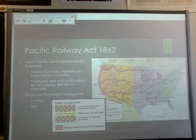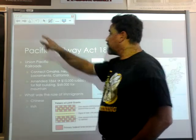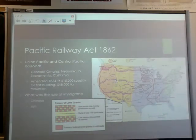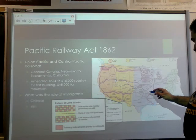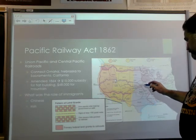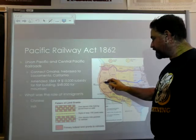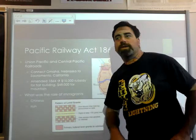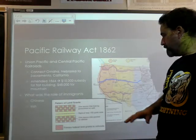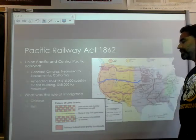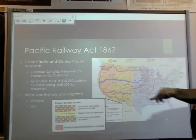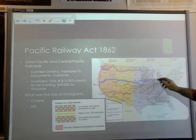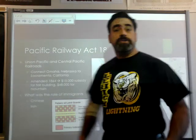The idea behind the Pacific Railway Act was to link California to the rest of the country — specifically, to link Omaha, Nebraska to Sacramento, thereby connecting Sacramento to the rest of the country using railroads. It was a pretty bold plan.